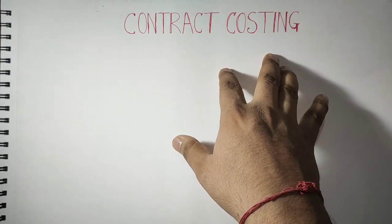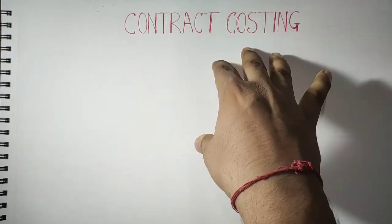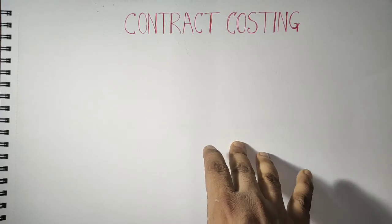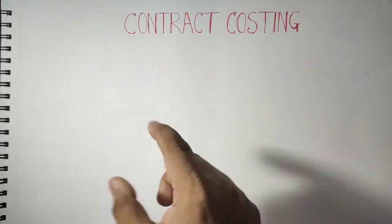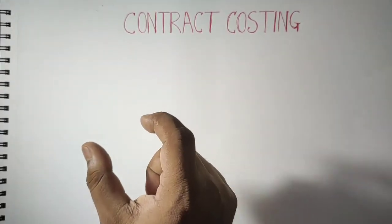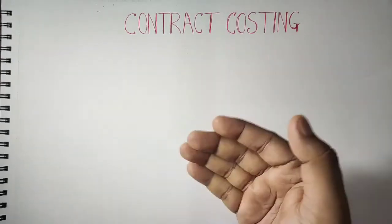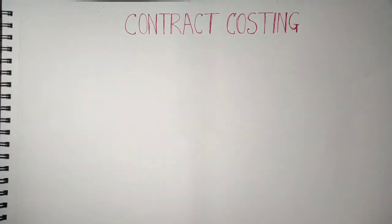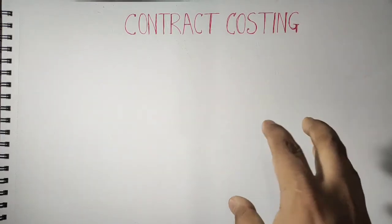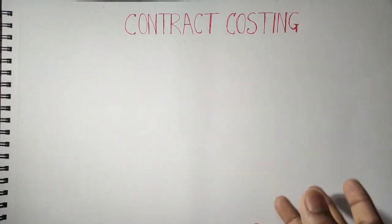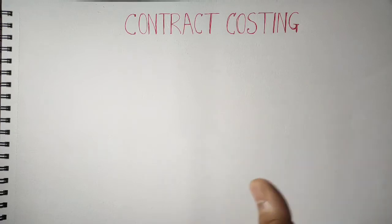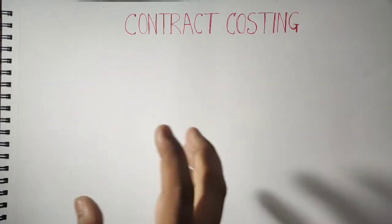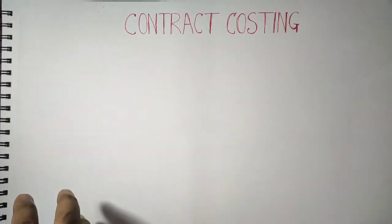When it comes to contract costing, what is different is that the time duration is long. As long as the time taken to complete a job, we are going to prepare the contract costing. Contract costing normally applies to building construction, civil engineering, and mechanical fabrication — whenever there is a construction work of long duration.